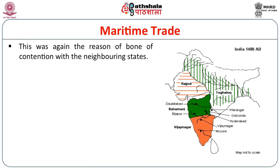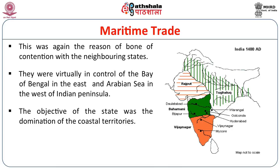This was also a bone of contention with neighbouring states. The existence of the Vijayanagara Empire was always at stake because of their economic position. The rulers had to be always alert as to how they could guard their economic control over the area. That made them extra cautious and militarily more active. They were virtually in control of the Bay of Bengal in the east and the Arabian Sea in the west during their heydays. The objective of the state was the domination of the coastal territories, which was the only stake they could have for their economic existence.